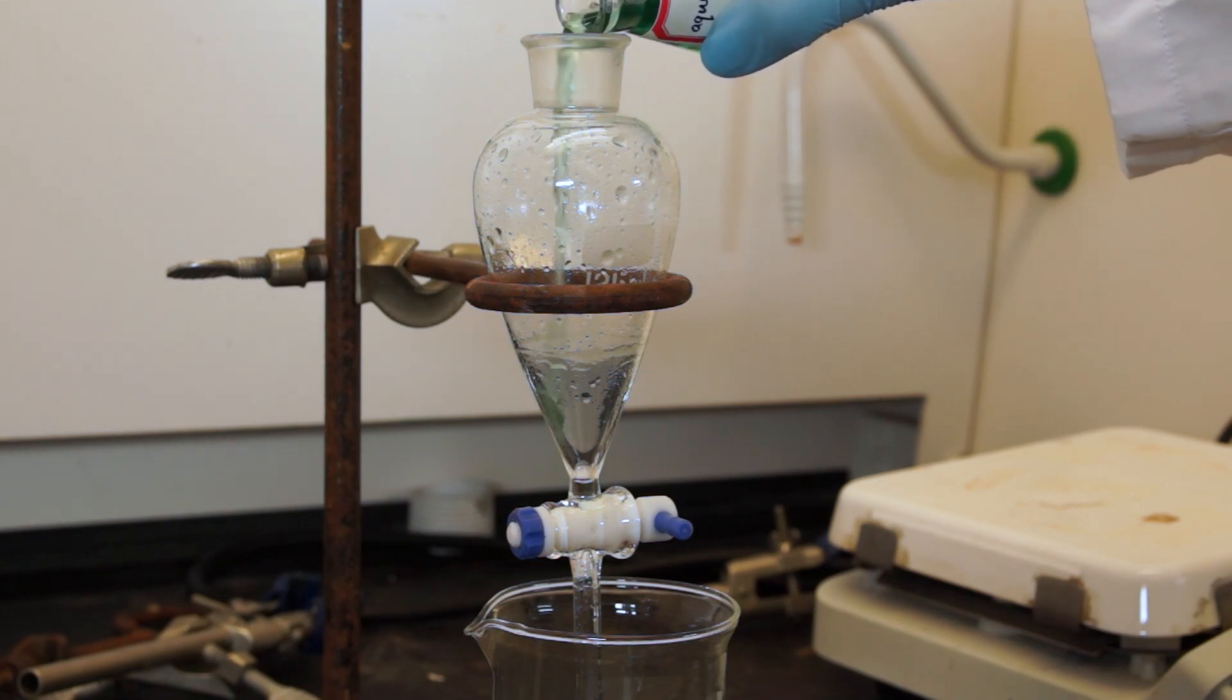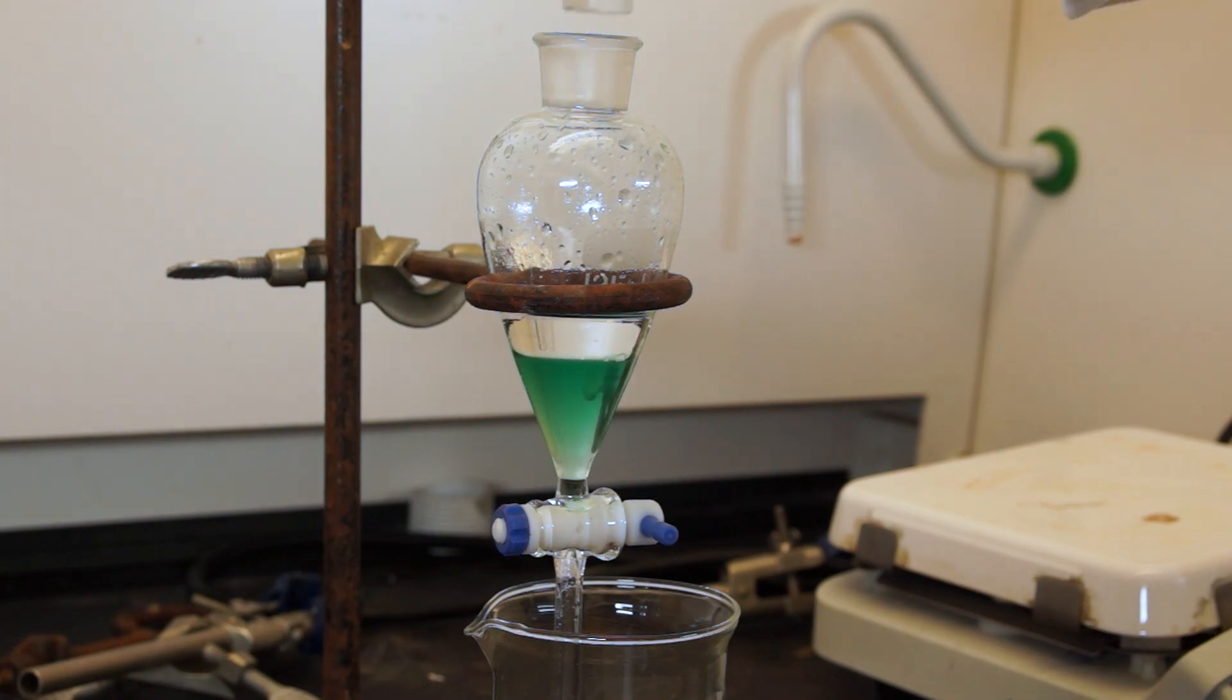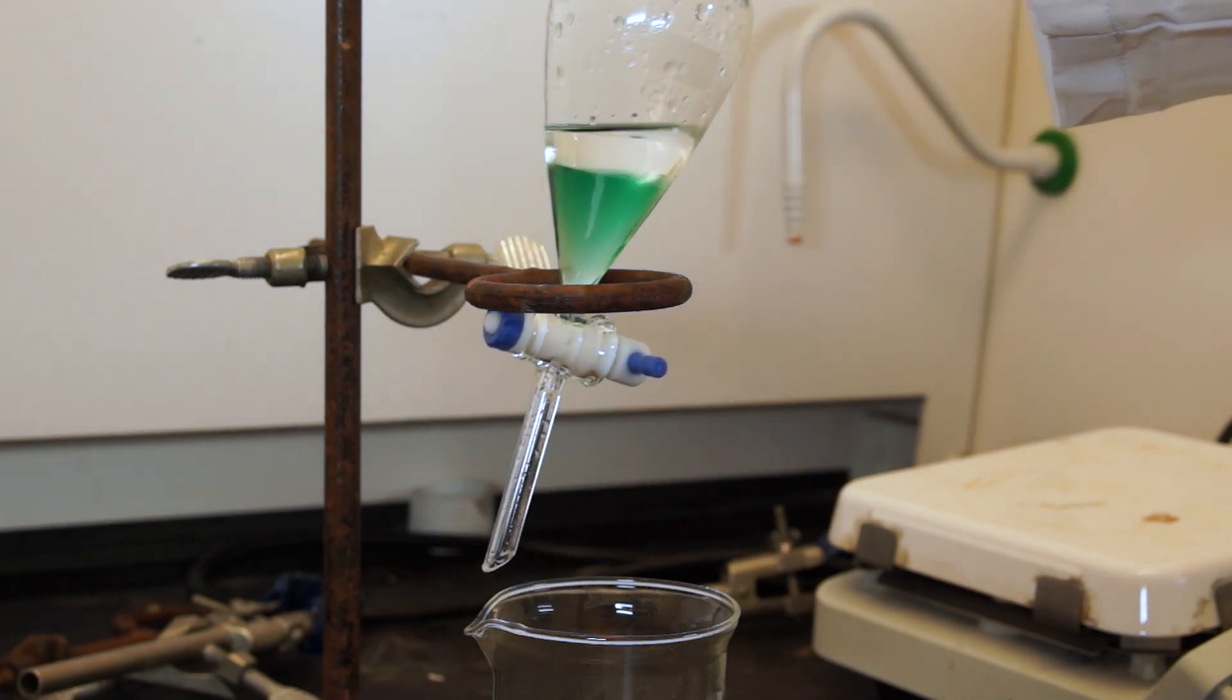Now, add the aqueous layer back into the separatory funnel. Add some new clean organic solvent, and repeat the process of shaking, venting, and collecting.